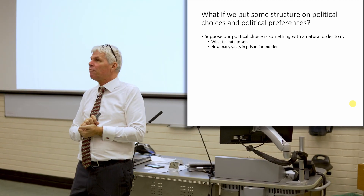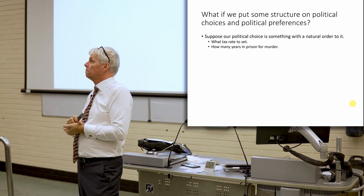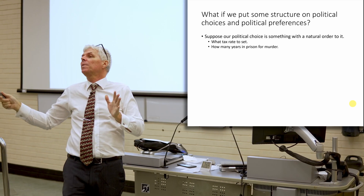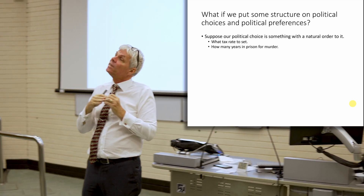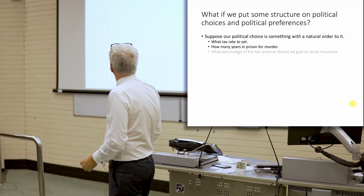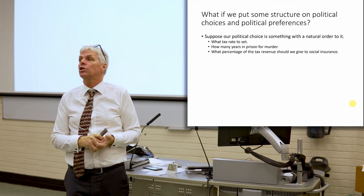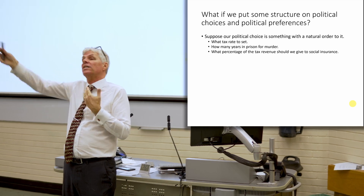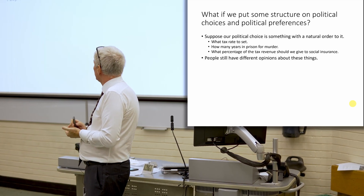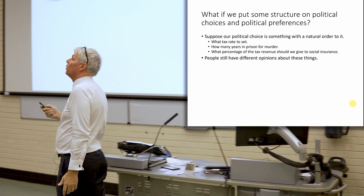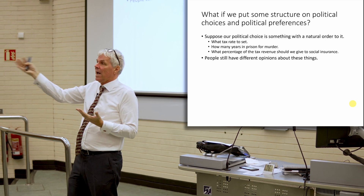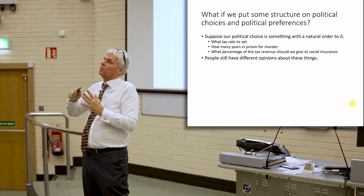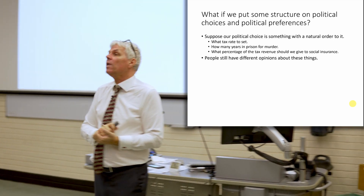If we want to punish murderers, how many years should they go to prison? People have different views — I want them gone for life, or I want them for 10 years and they'll be rehabilitated. But there's definitely a sense that 10 years is less than life, so there's a natural order. What percentage of our tax revenue should we give to social insurance? Lots of stuff has a natural order — how many fire departments should we have? It's costly, but nice to have, and there's a sense of more versus less.